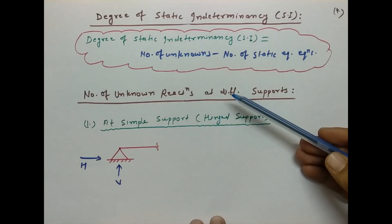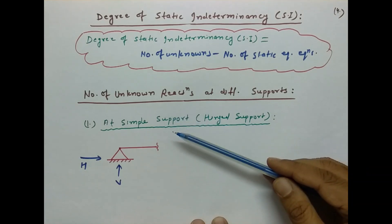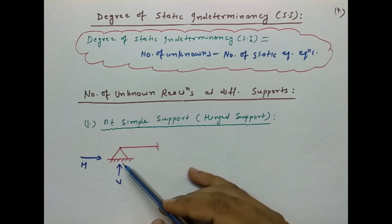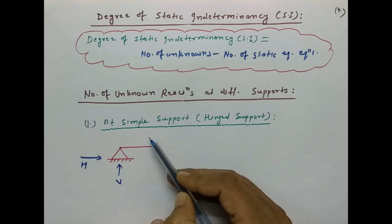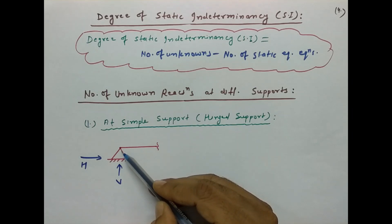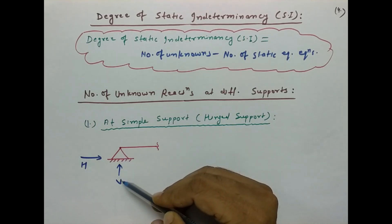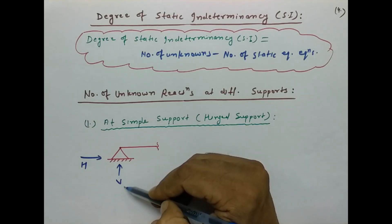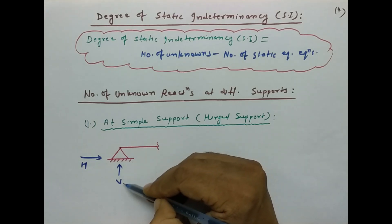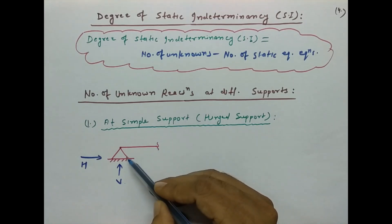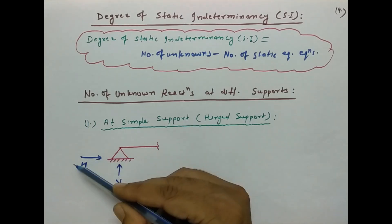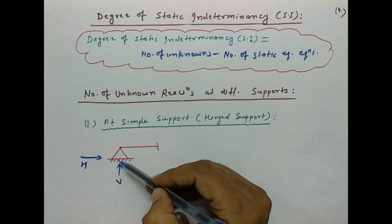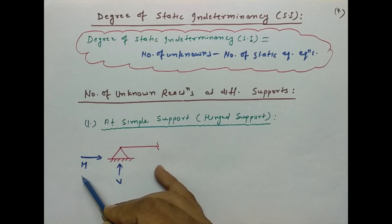अब हम बात करते हैं different supports पर किस तरह की reactions generate होती हैं। Simple support, जिसे hinge support भी कहते हैं — इस पर अगर कोई force act करे तो यह beam को sink नहीं होने देगा, इसलिए vertical direction में reaction produce होगा। अगर horizontal direction में force लगे तो यह fix होने के वजह से horizontal direction में move नहीं करेगा, इसलिए horizontal reaction produce होगा।